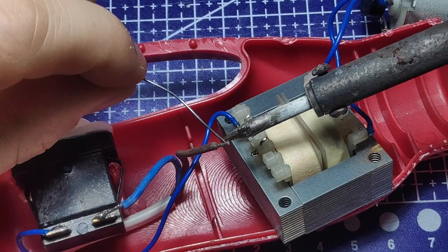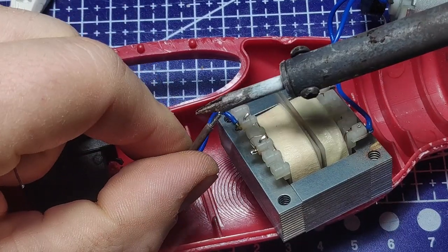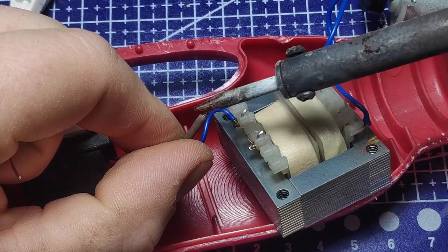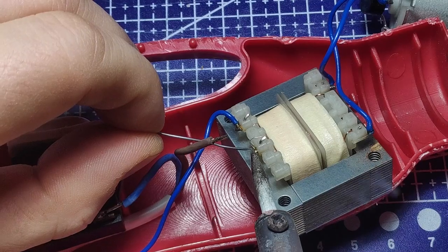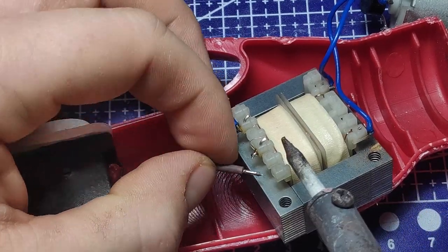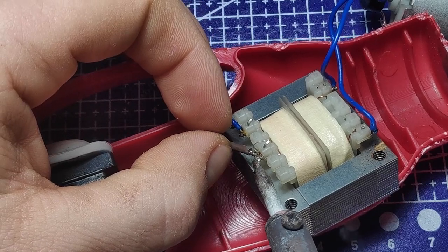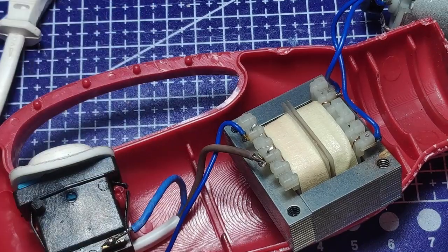Since there wasn't anything else that was broken I continued with the repair by first laying out everything where it needs to be and adding some fresh solder to both the loose wire and the transformer terminal where it needs to connect. After that I pressed the wire onto the terminal and joined the two with some heat from the soldering iron.